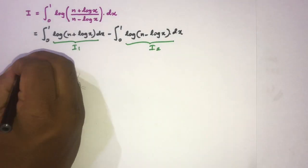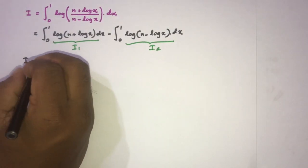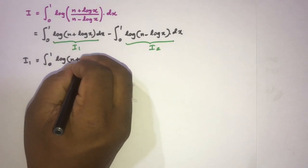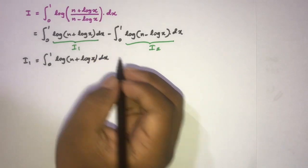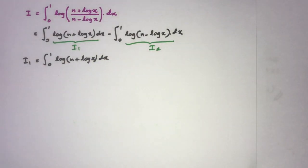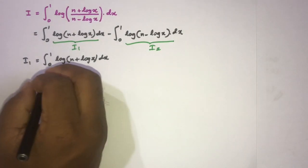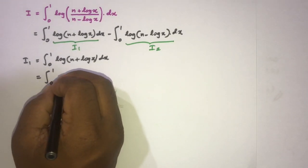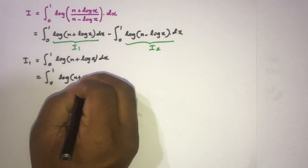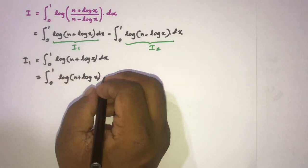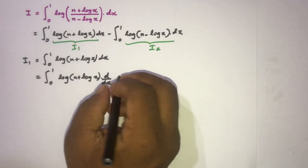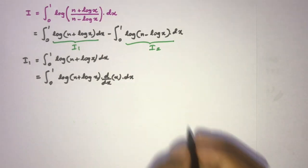Now we are going to evaluate I1. I1 equals the integral from 0 to 1 of natural log of (n plus natural log of x) dx. We can evaluate this integral using IBP — integration by parts. I am going to take natural log of (n plus natural log of x) as the first function, so we differentiate that, and v equals x.